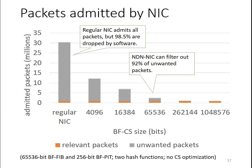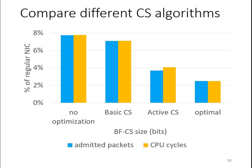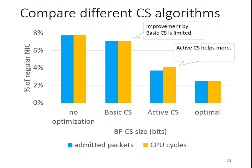With larger bloom filters, filter accuracy is even better. When comparing CS optimization algorithms, basic CS gives only limited improvement because it only works when FIB entries cover CS cached names, which doesn't occur often. Active CS helps more and makes performance quite close to optimal. That concludes the first half of my talk about NDN Unique.